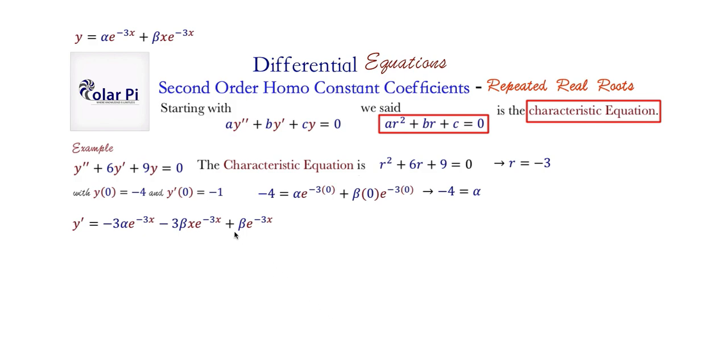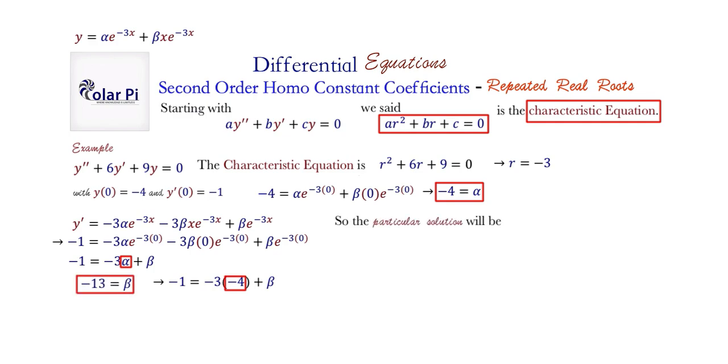That's about the only detail noteworthy. But otherwise, saying that y prime is negative 1 when x is 0, making this negative 1, making all the x's here 0, we get this second equation. We know from our earlier work that alpha is negative 4, so on this part we do that. So we see that beta is going to be negative 13. We have alpha and beta, and therefore we can say what our particular solution is. And that's that.